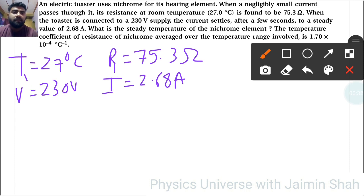The temperature coefficient alpha is given. The formula is R2 equals R1 times (1 plus alpha times (T2 minus T1)).